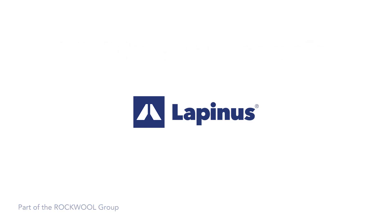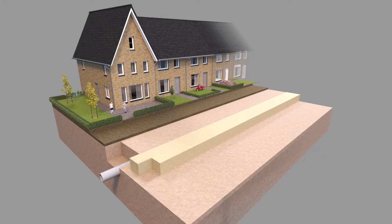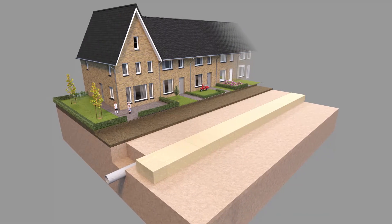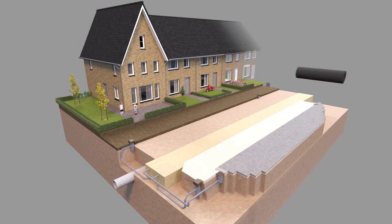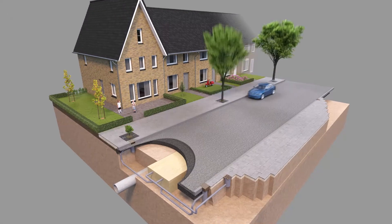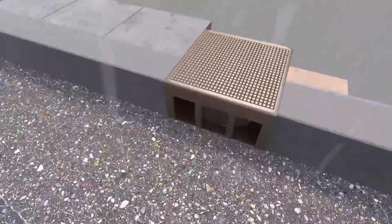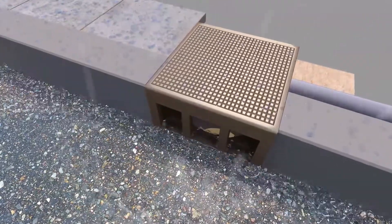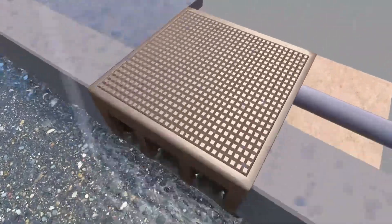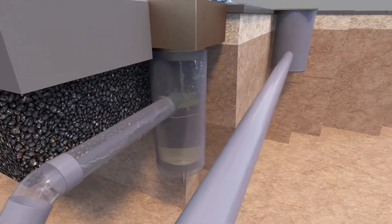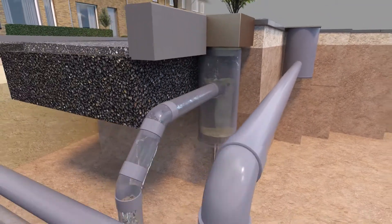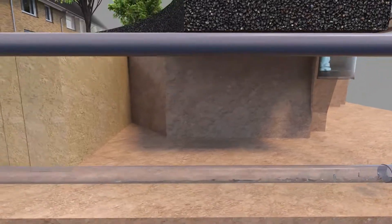This is how rock flow works. Modular rock flow elements are installed below the surface. An integral pipe system transports the water quickly to the rock flow package. The hollow space between the stonewall fibres is then filled with water. The rock flow elements can absorb up to 95% of their own volume of water.